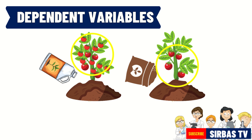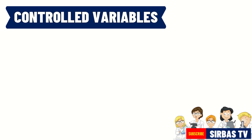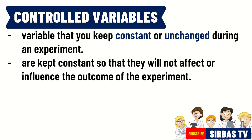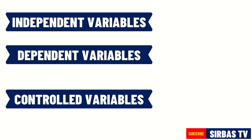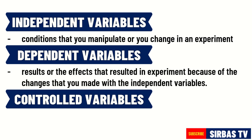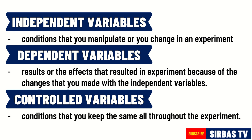The last type of variable is the controlled variable. This is the variable that you keep constant or unchanged during an experiment, so that it will not affect or influence the outcome. To summarize: independent variables are the conditions you manipulate or change; dependent variables are the results or effects that come from those changes; and controlled variables are the conditions you keep the same all throughout the experiment.